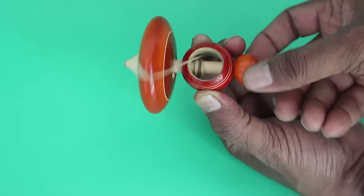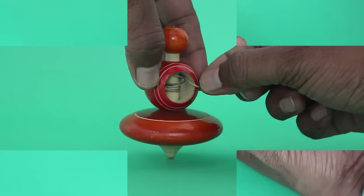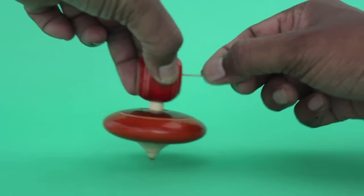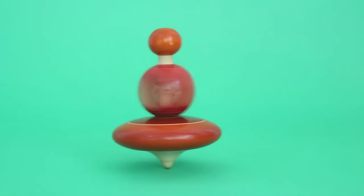The wooden top has a hollow bead and a string attached to its shaft. You wind the thread to the axle then hold the bead with one hand and pull the string with the other.